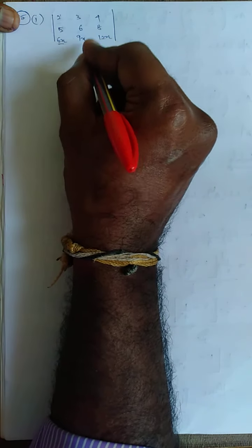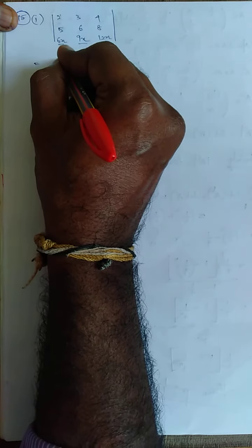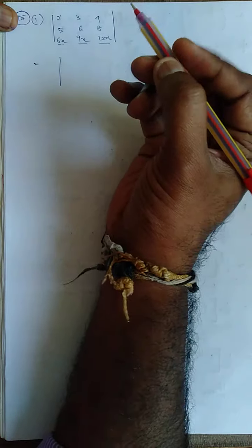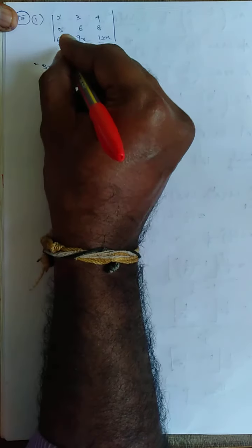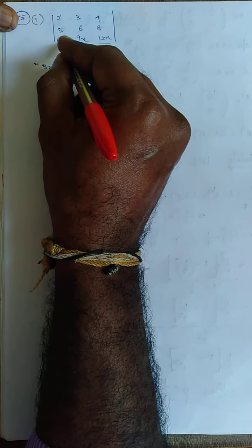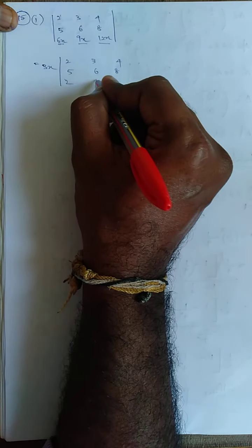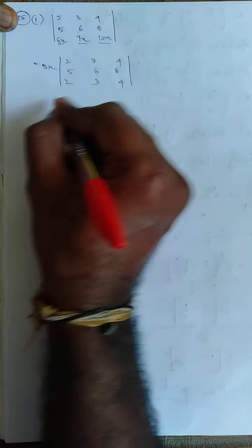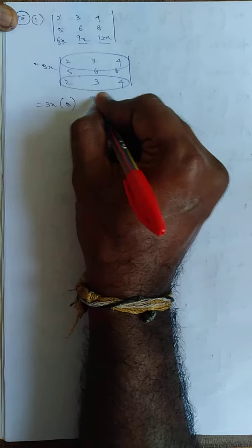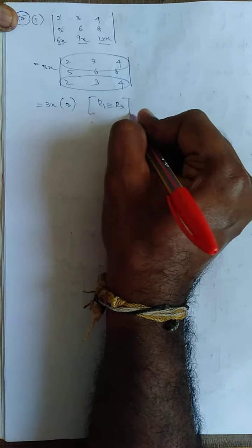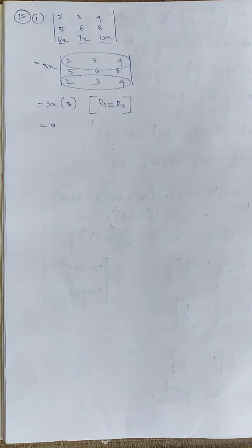15th sum, first sub-question: without expanding, I need to find the answer for this determinant. See here — 6, 9x, 12x — what is common? The common factor is 3x. If I take 3x outside, the rows become 2, 3, 4. Taking 3x common, the answer is 3x into 0, which is 0, because R1 is identical to R3. Answer is 0.